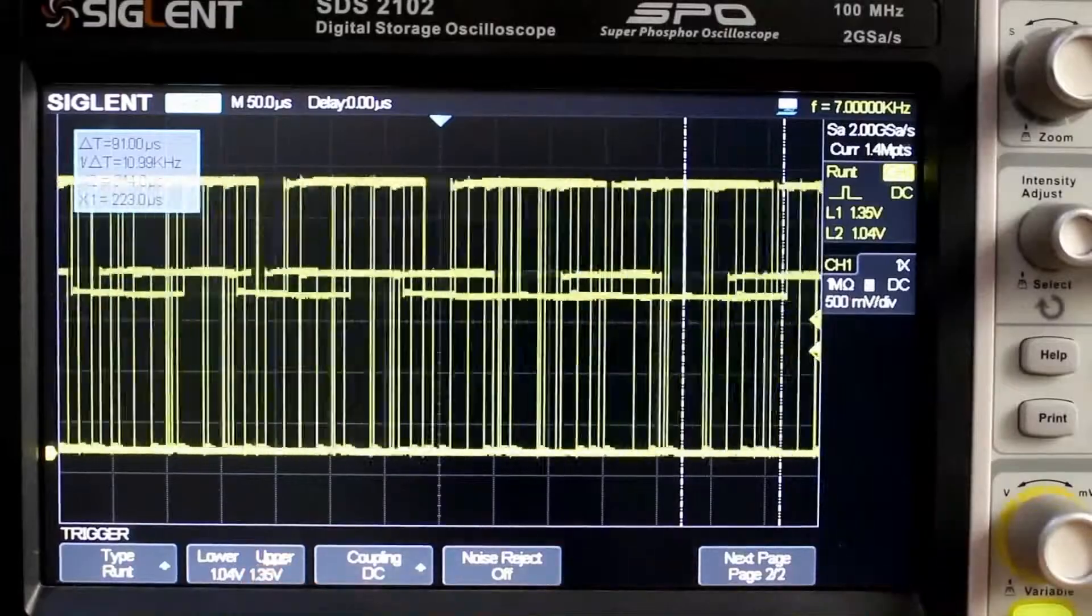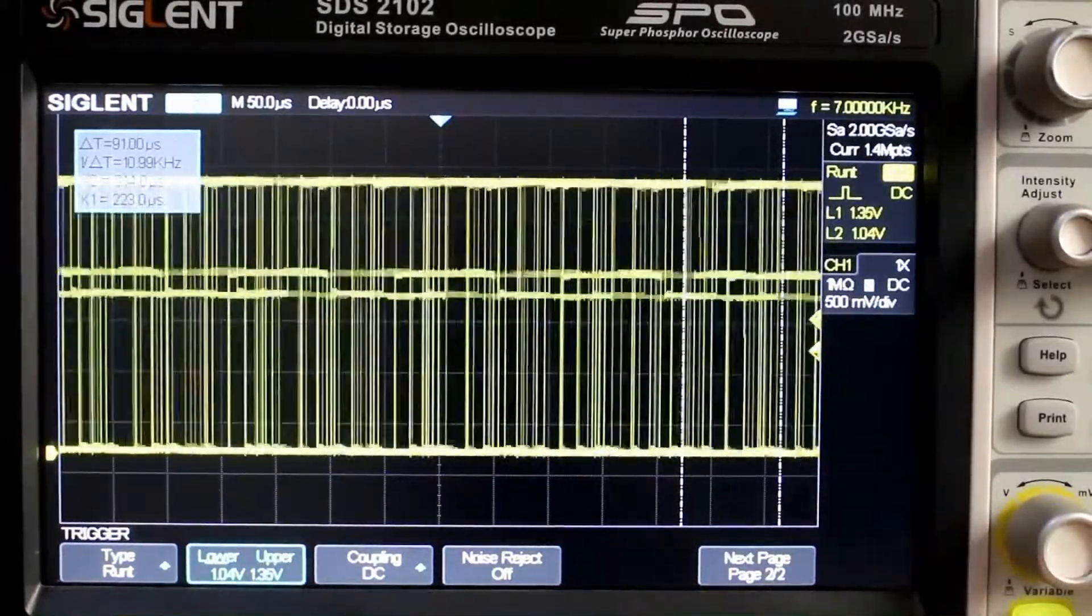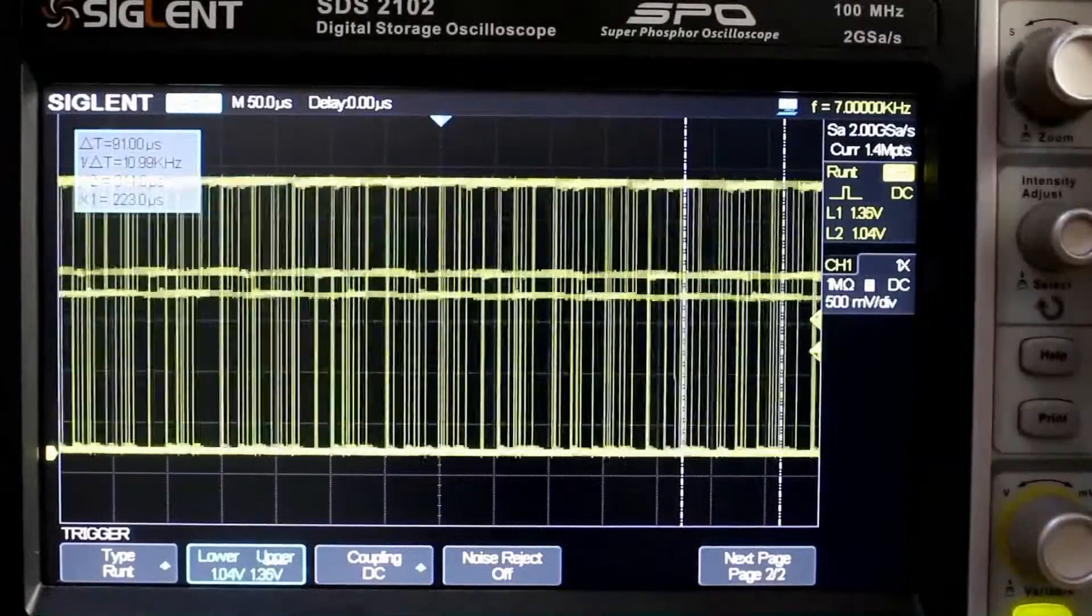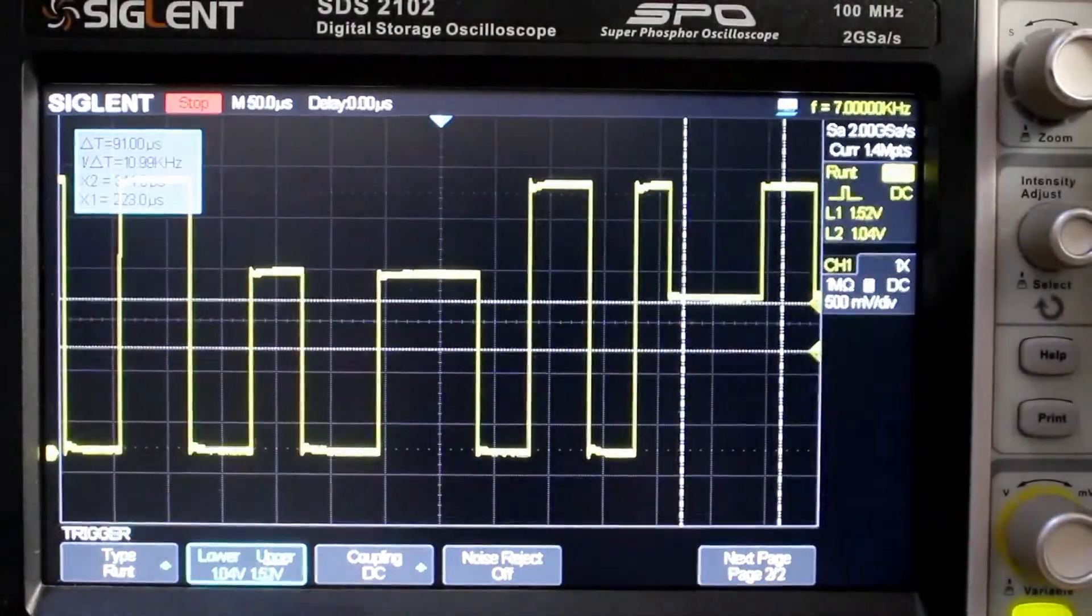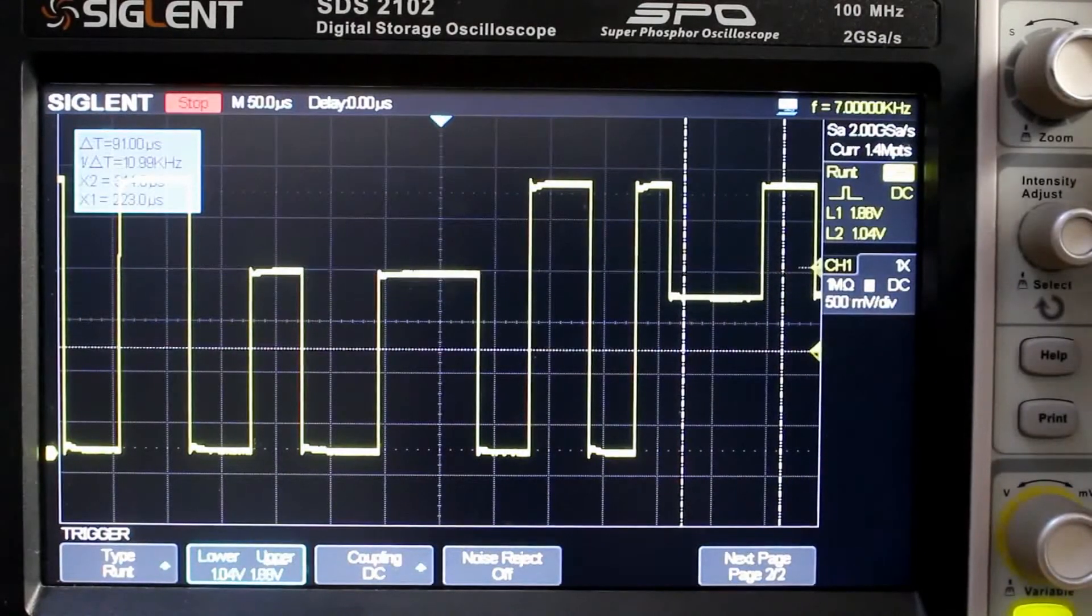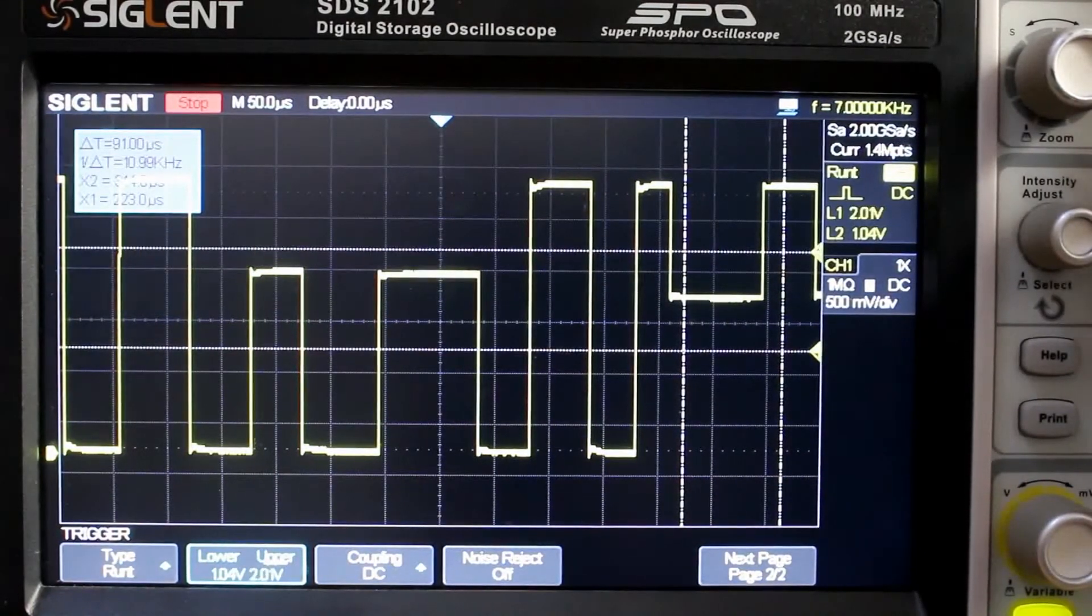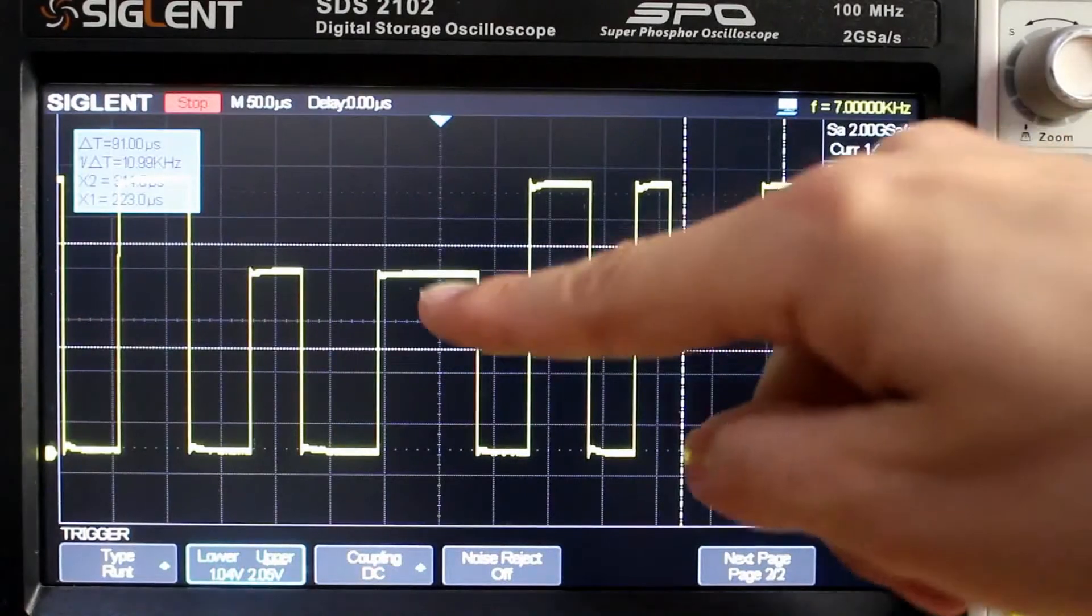Now we need to set our voltage range. So if we stop it again, we can have a look. And then we can adjust our voltage range just to catch those runt pulses.